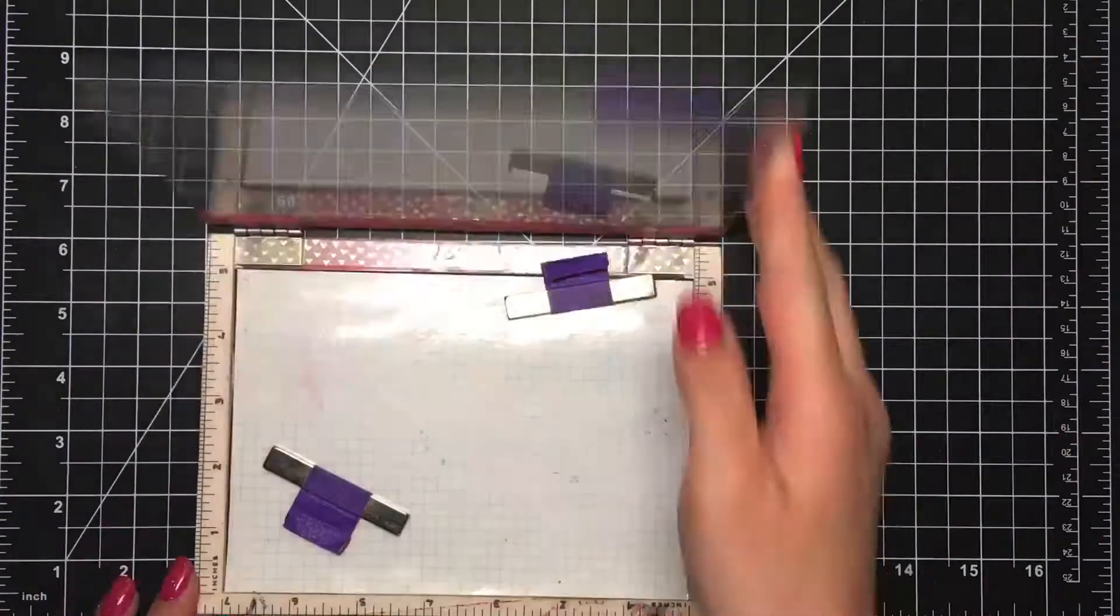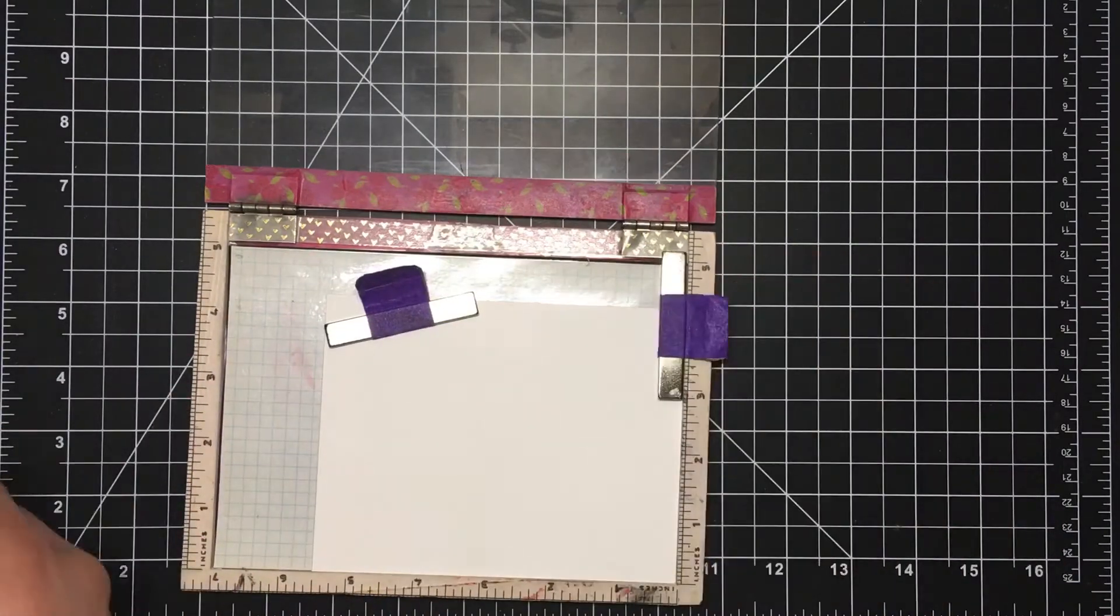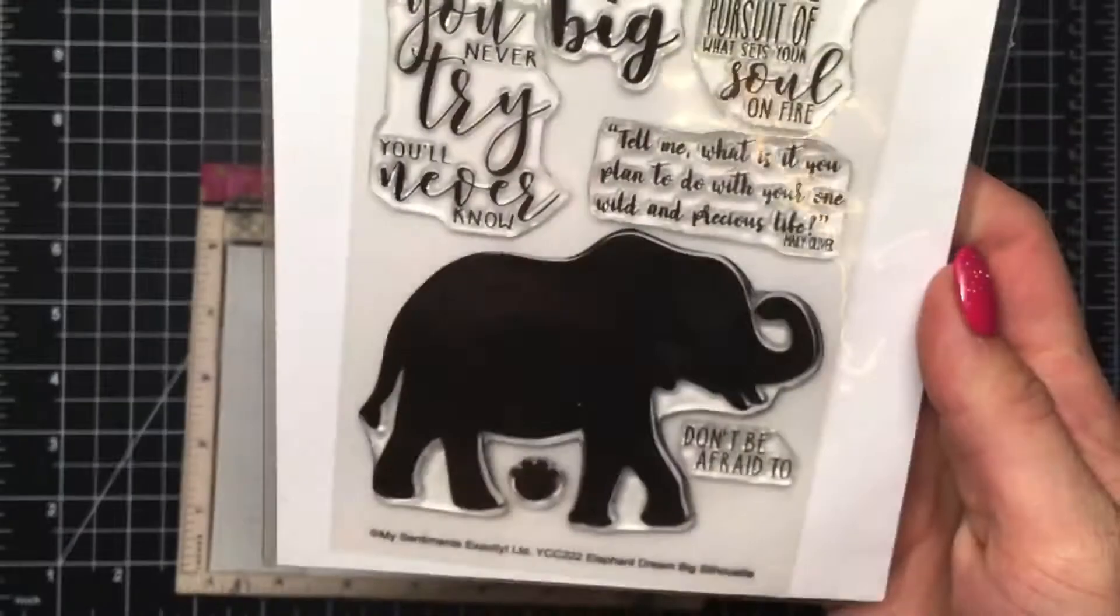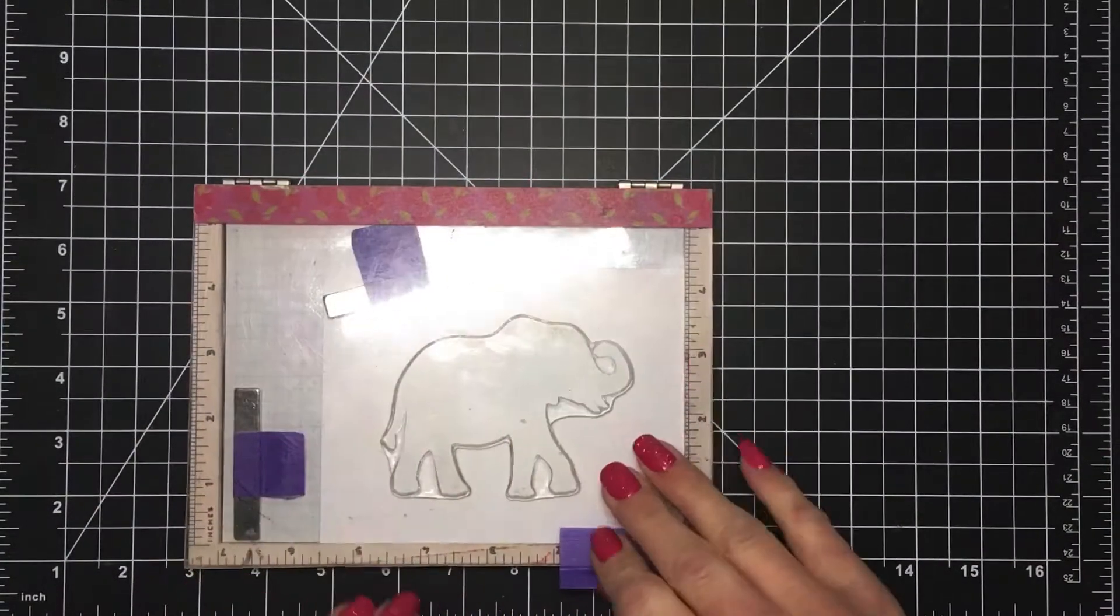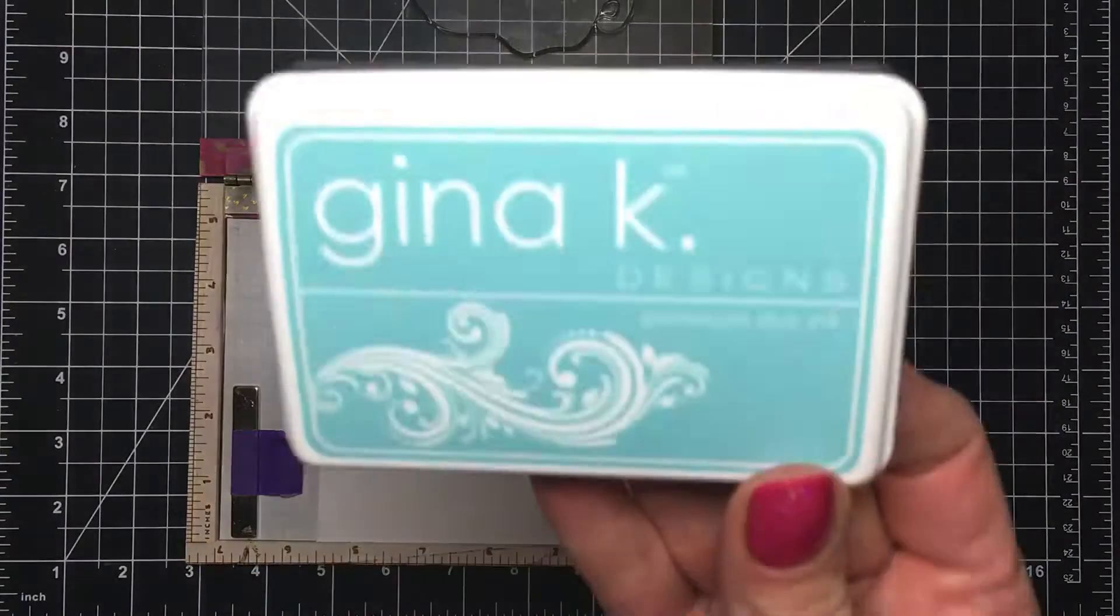I'm starting out with a piece of Cougar 110 pound cardstock cut down to four and a quarter by five and a half inches. I have stuck that in my stamp positioning tool and I'm using this stamp by My Sentiments Exactly from the stamp set Elephant Dream Big Silhouette.